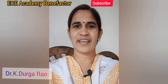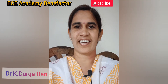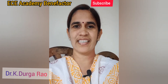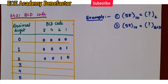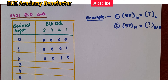Hello dear students, welcome to ECE Academy Benefactor. In this class I will be explaining about 8421 BCD code and XS3 code. XS3 code is a modified form of BCD code. Let us start the class with 8421 BCD code.